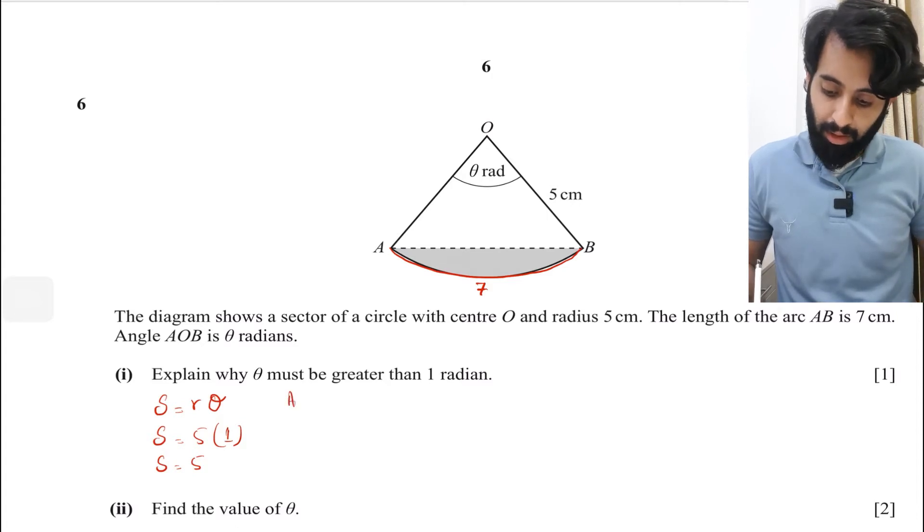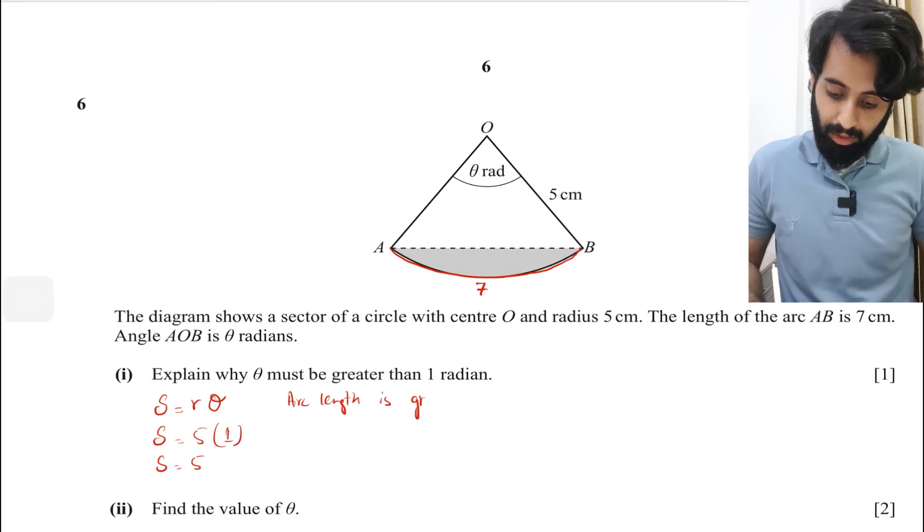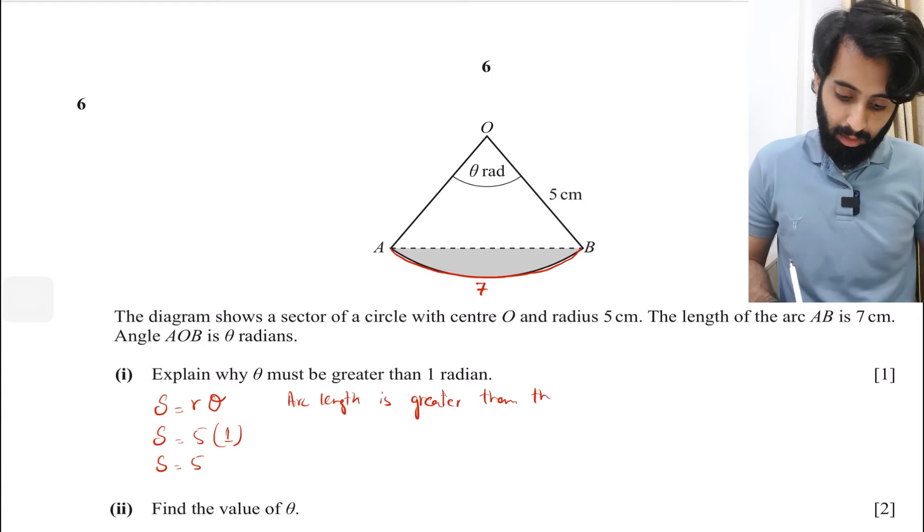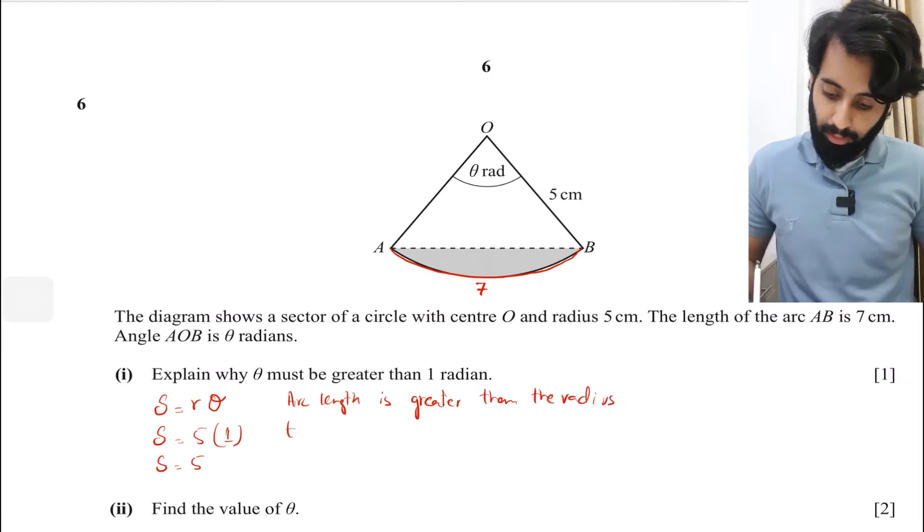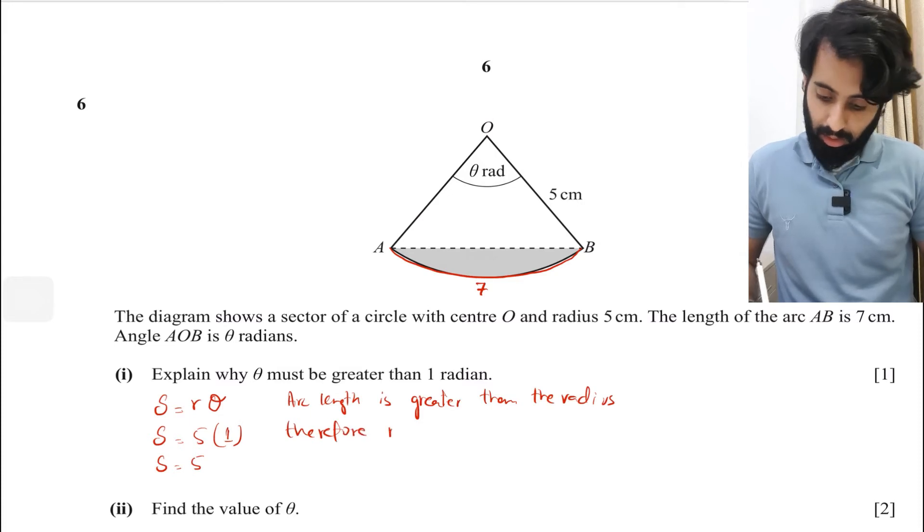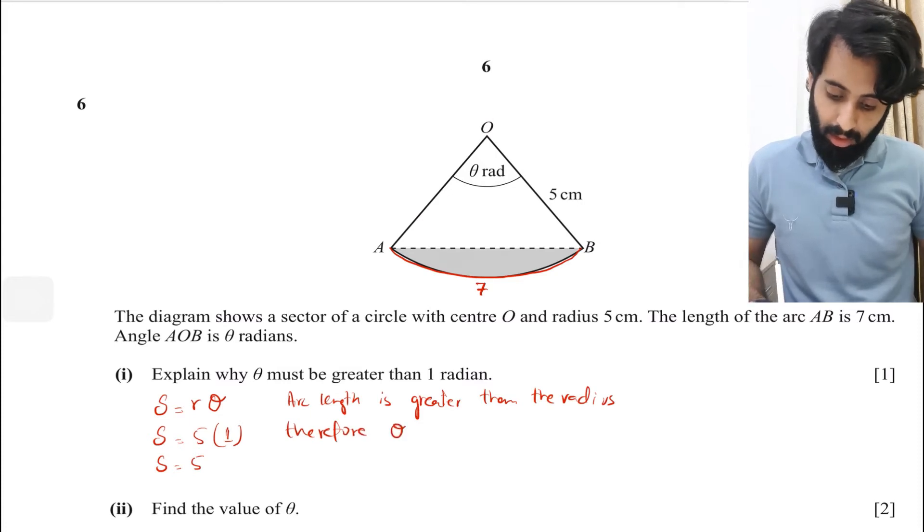So here's what we're going to say: arc length is greater than the radius, therefore θ must be greater than 1 radian.